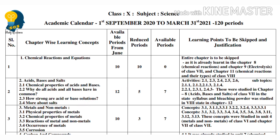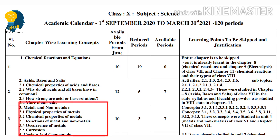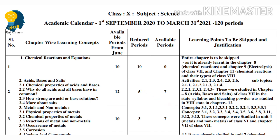Next, the third lesson — Metals and Non-metals. In this lesson we have 5 important topics: Physical Properties of Metal, Chemical Properties of Metal, Reactions of Metals and Non-metals, Occurrence of Metals, and Corrosion. These concepts have already been studied in the 7th and 8th standards.